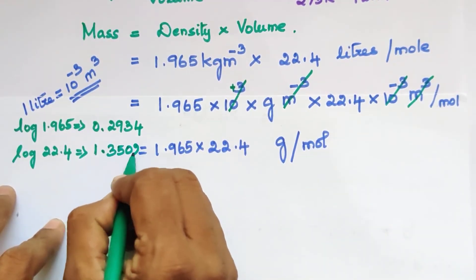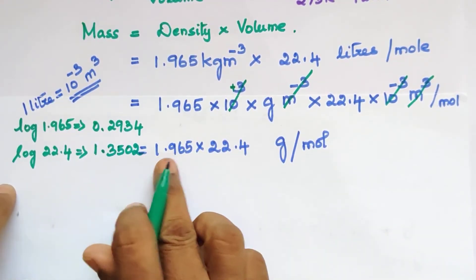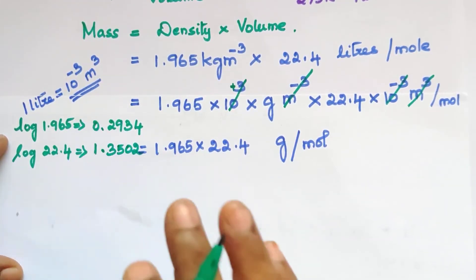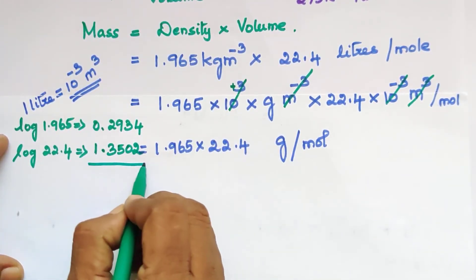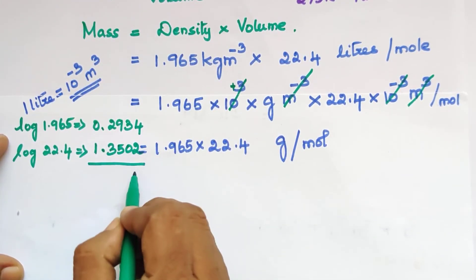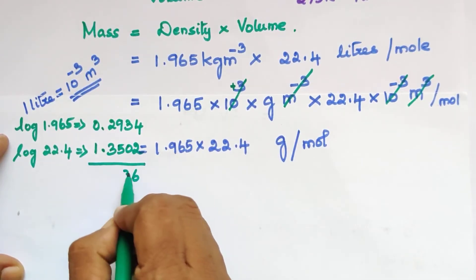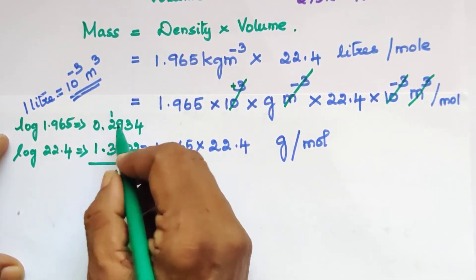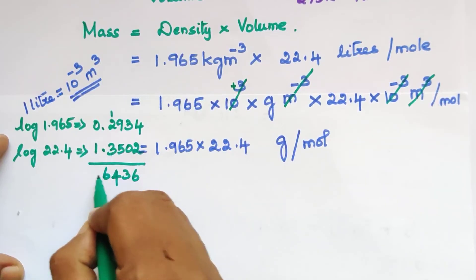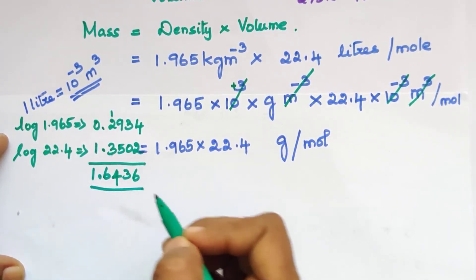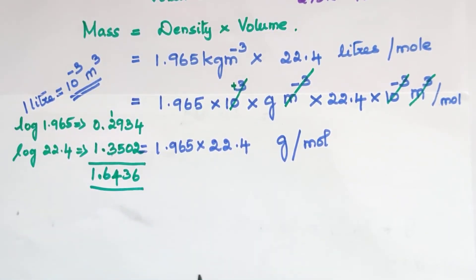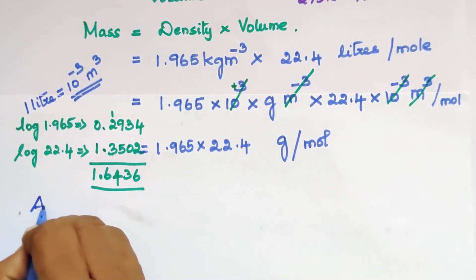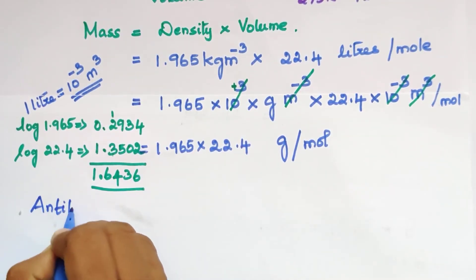In logarithm, multiplication means we add the log values. Adding the two log values gives us 1.6436. Now we take the anti-log of 1.6436.